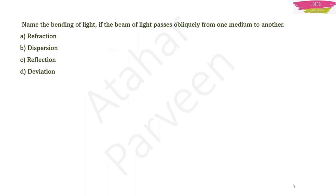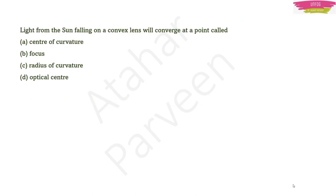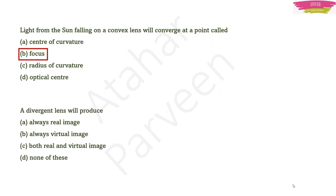Question: Name the bending of light when a beam passes obliquely from one medium to another. The answer is refraction. Question: Light from the sun falling on a convex lens converges at a point called the focus. Question: A divergent lens always produces — the answer is always a virtual image. Remember, divergent lens means concave lens.